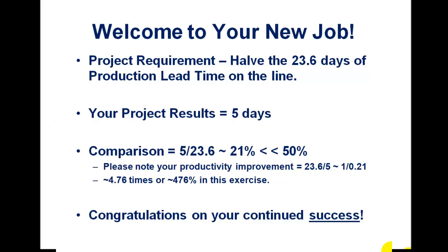Remember why we did this? We got this offer from one of the companies we thought might be nice to work for. Acme Manufacturing offered us a project for $10,000, and if it was successful, they wanted us to chop out half the time — just half the time from paying to getting paid. They had 23.6 days of production lead time, also called paying-and-getting-paid time. Our project result was five days. If you divide the five days we accomplished over what they had, it's about 21%, which is considerably lower than 50%.